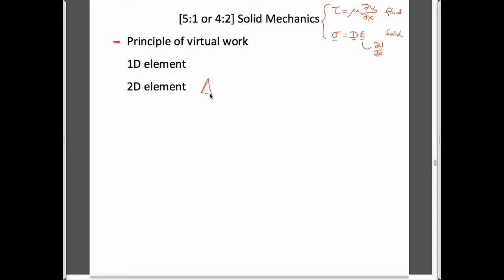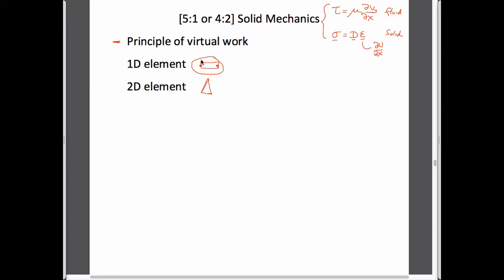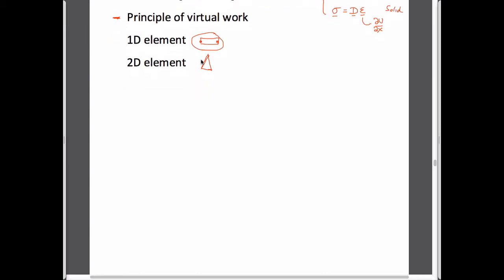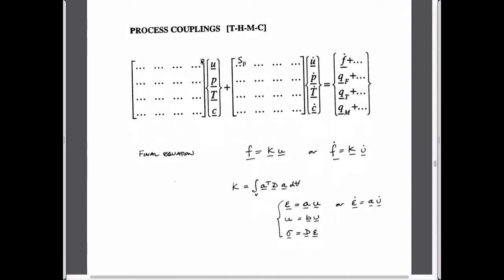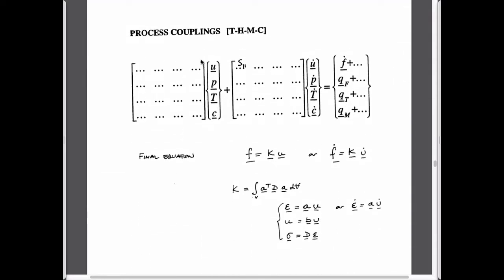We'll do the same as before — work from the simplest geometry we can imagine. In one dimension we only have one degree of freedom — a vectoral degree of freedom of displacement — and then it gets more complicated when we go to two-dimensional elements. That's the background to what we'll do.